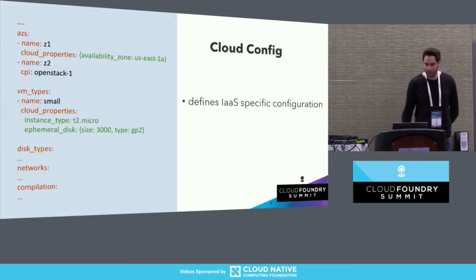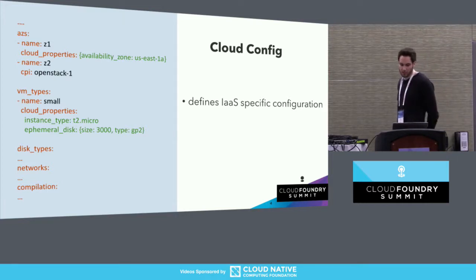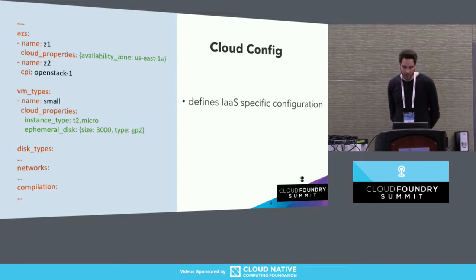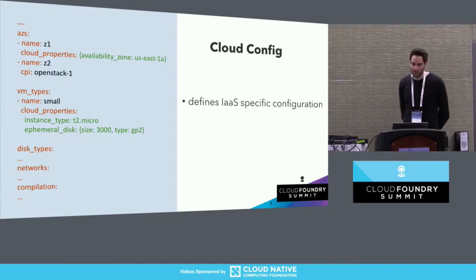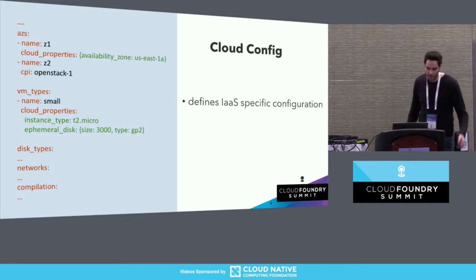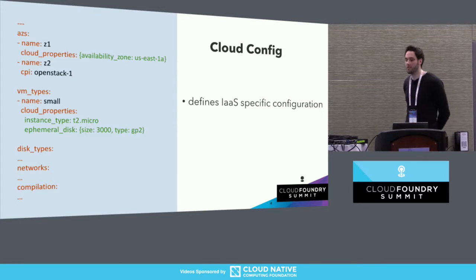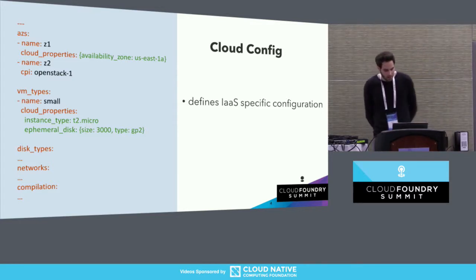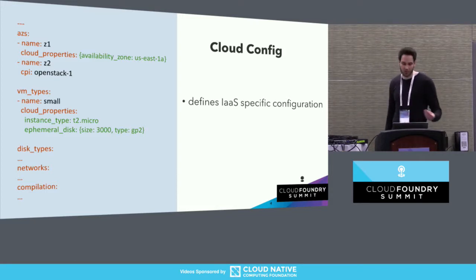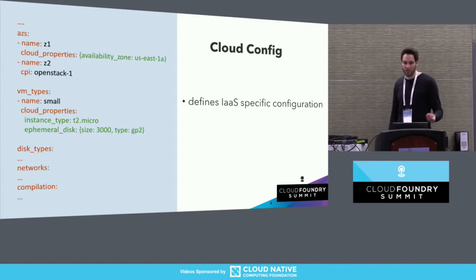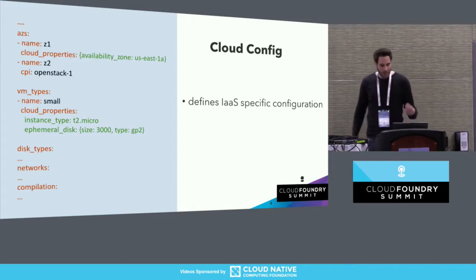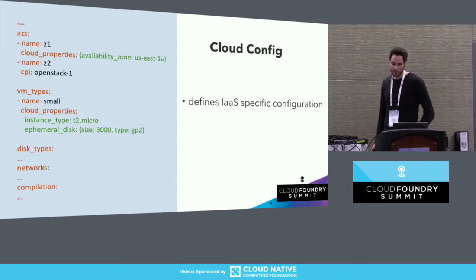So let's recap the existing config types. The cloud config defines infrastructure-specific configuration. The value of the cloud properties key — everything in green — is infrastructure-dependent, and the different infrastructure CPIs define their own schema for the cloud properties section. For example, the AWS CPI defines a key called availability zone with a value like US-East-1A, whereas the GCP CPI calls it just 'zone.' The name given to BOSH gets later referenced from the deployment manifest, which defines in which availability zones instances will run.